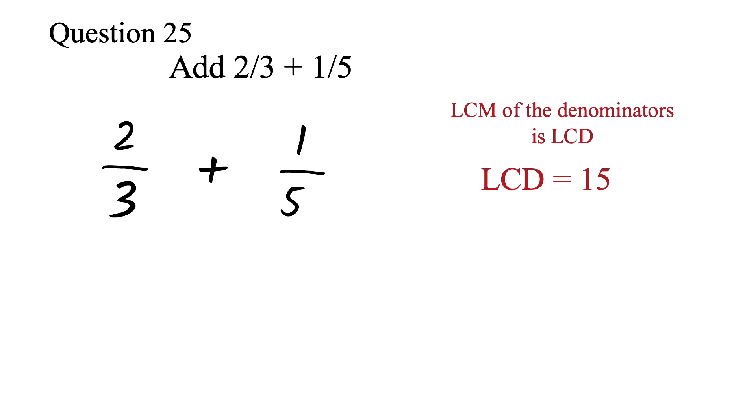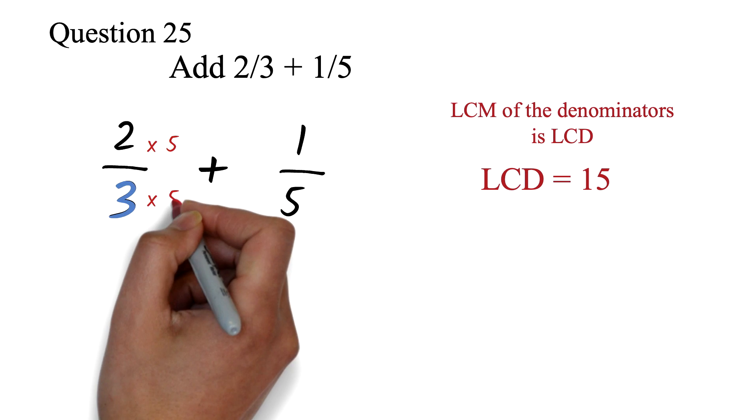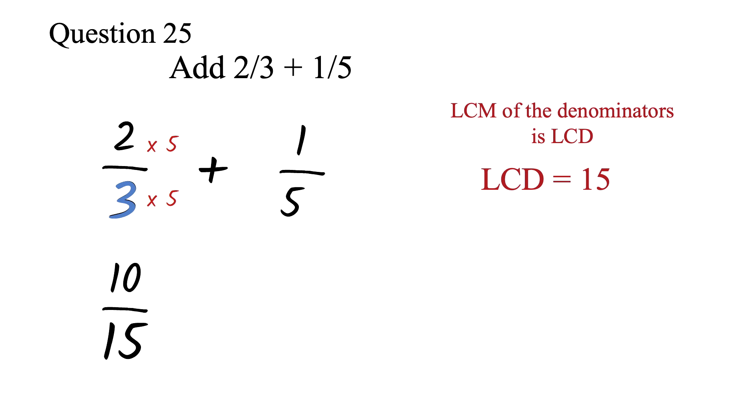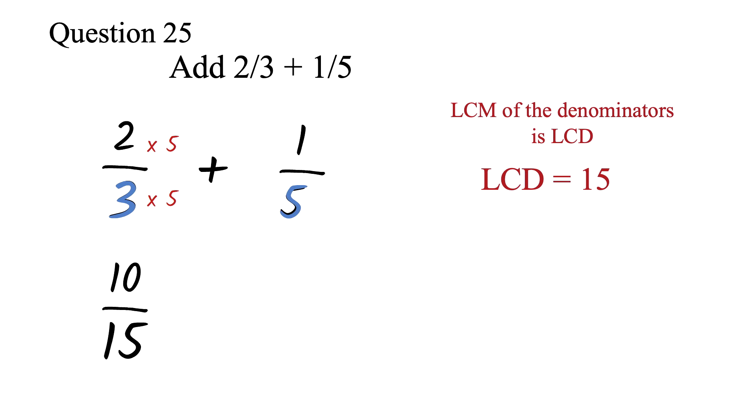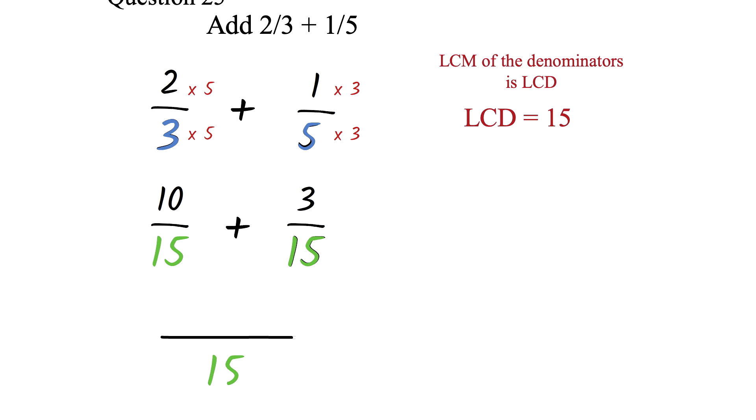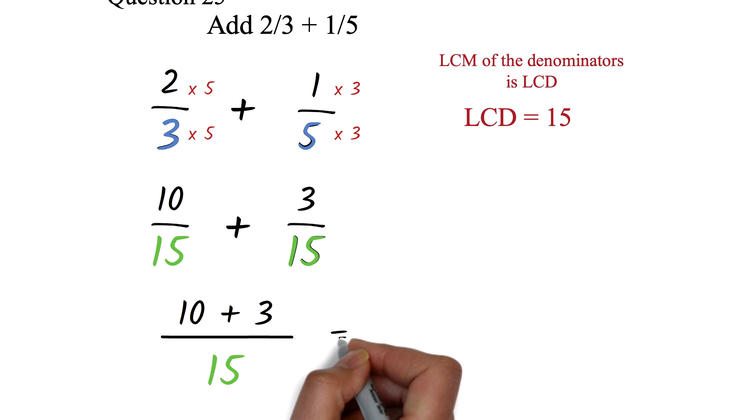After finding the LCD, we'll take the first fraction and ask three times what number will give the LCD 15. This number is 5. So we will multiply this 2 over 3 by 5 to get 10 over 15. Next, we will ask five times what number will give us the LCD 15. The number is 3. We'll multiply the 1 over 5 by 3 to get 3 over 15. Now we can see that the fractions have common denominators. We said we can simply add the numerator in this case. 10 plus 3.